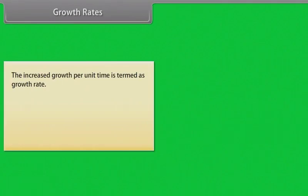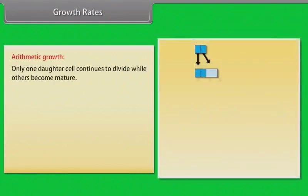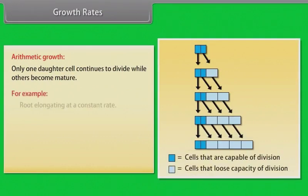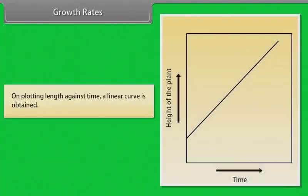Growth Rates: The increased growth per unit time is termed as growth rate. Plants show two types of growth — arithmetic and geometric. Arithmetic growth: Only one daughter cell continues to divide while others become mature. For example, root elongating at a constant rate. Mathematically, Lt = L0 + Rt, where Lt is length at time t, L0 is initial length, and R is growth rate. On plotting length against time, a linear curve is obtained.